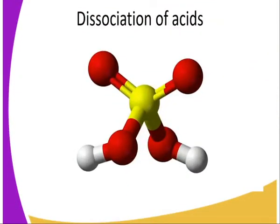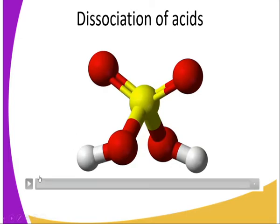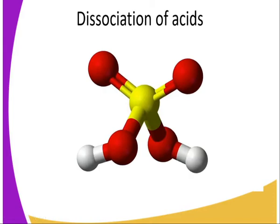What happens in dissociation of acids? We are going to look at that in the following diagram. In this diagram, we are using H to stand for hydrogen ions, and the letter A to stand for an ion that results in the formation of the ionic compound.